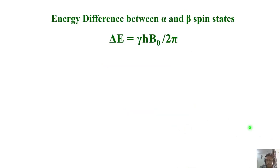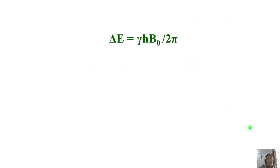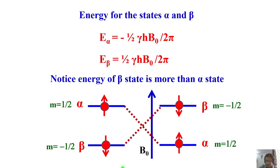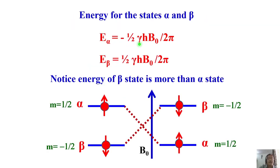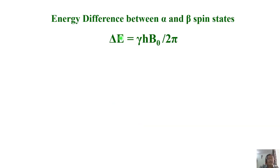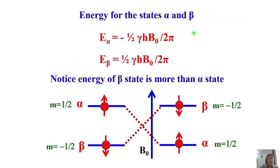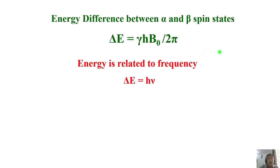Now we calculate the energy difference between the alpha and beta states. Taking ΔE = E_beta - E_alpha, the ½ factors cancel and we get ΔE = γ·H·B naught / 2π. From basic atomic physics, we also know that energy can be expressed in terms of frequency: ΔE = H·ν. So delta E equals H·ν, and we equate this to the expression we just derived.